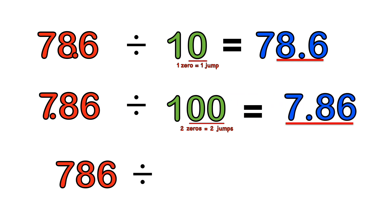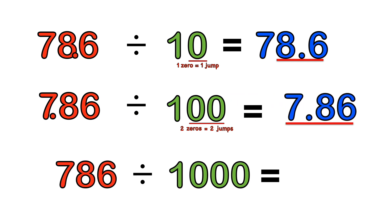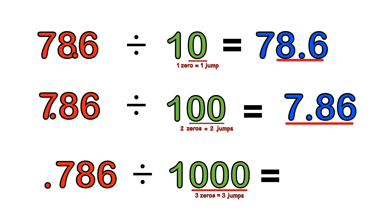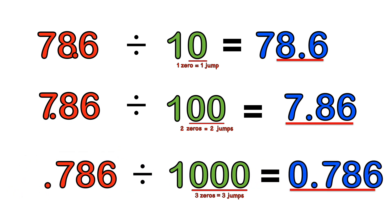For 786 divided by 1000: step one, introduce the decimal point. Step two, three zeros equals three jumps to the left. We move the decimal point three places to the left, and the answer becomes 0.786. So 786 divided by 1000 is 0.786. Coincidentally, if you count the number of digits after the point — here we have three — that equates to the number of zeros in the question.